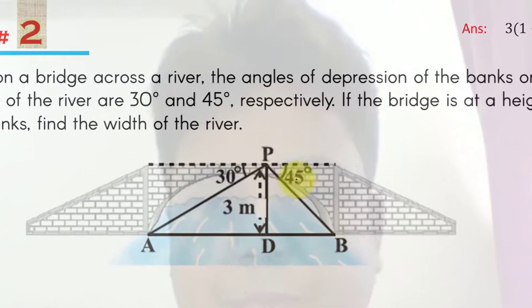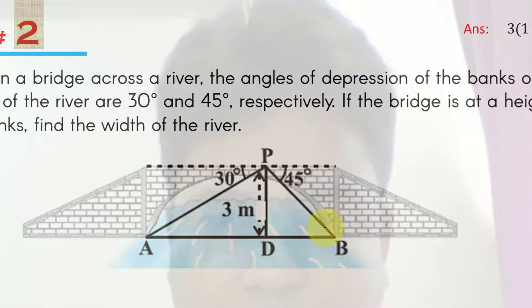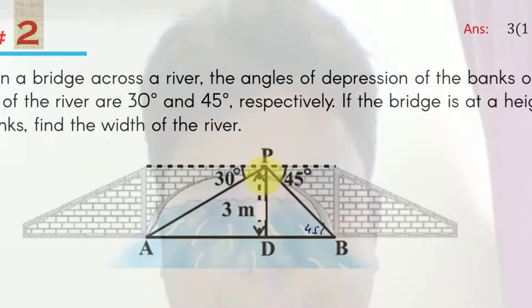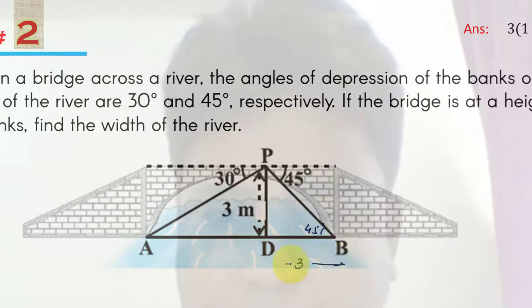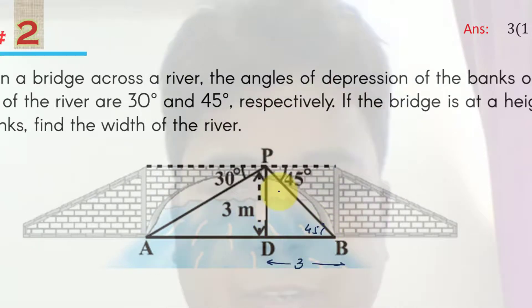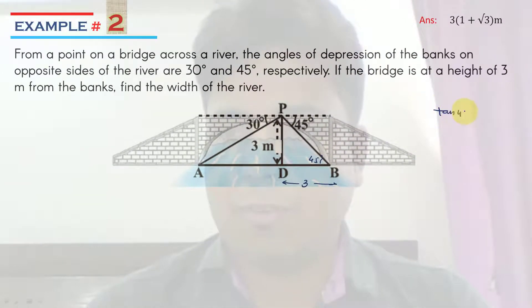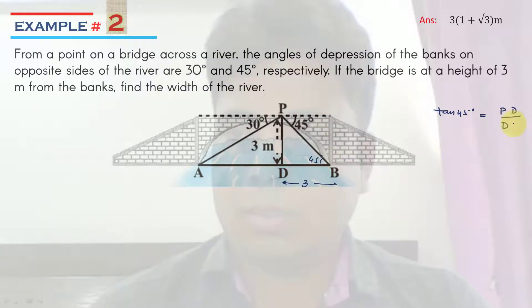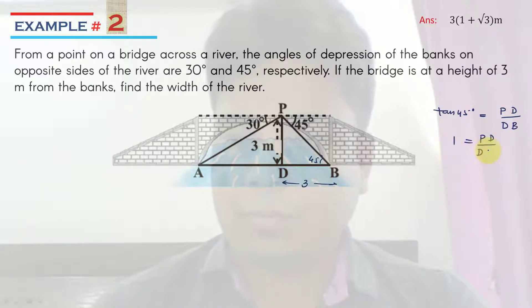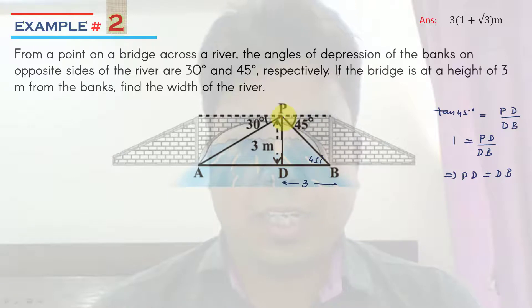Since this angle is 45°, the alternate interior angle will also be 45°. Since this is 45° and PD equals 3 meters, DV must also equal 3 meters. Applying tan 45° as PD upon DV: tan 45° equals 1, so 1 = PD upon DV, which implies PD equals DV. Since PD is 3 meters, DV length must also be 3 meters.